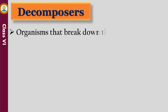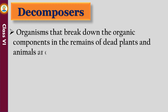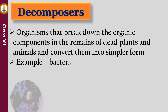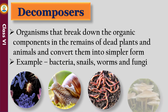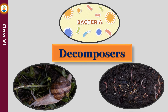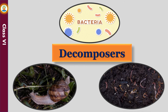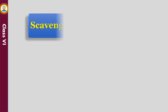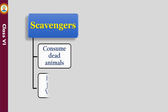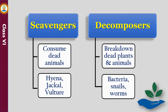Decomposers are organisms that break down the organic components in the remains of dead plants and animals and convert them into simpler forms. Examples are bacteria, snails, worms, and fungi. Scavengers eat or consume dead animals, whereas decomposers break down the remains of dead plants and animals. Both play a very important role in keeping the environment clean.